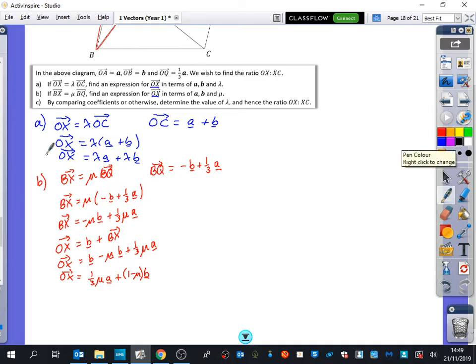Now, I'm going to take this bit here and this bit here. And I'm going to compare the coefficients together. Now, we're really at the final stretch of this. So we can see from here that lambda A and a third mu A come together. So that tells me that lambda is equal to a third mu. That came from comparing the A parts together.